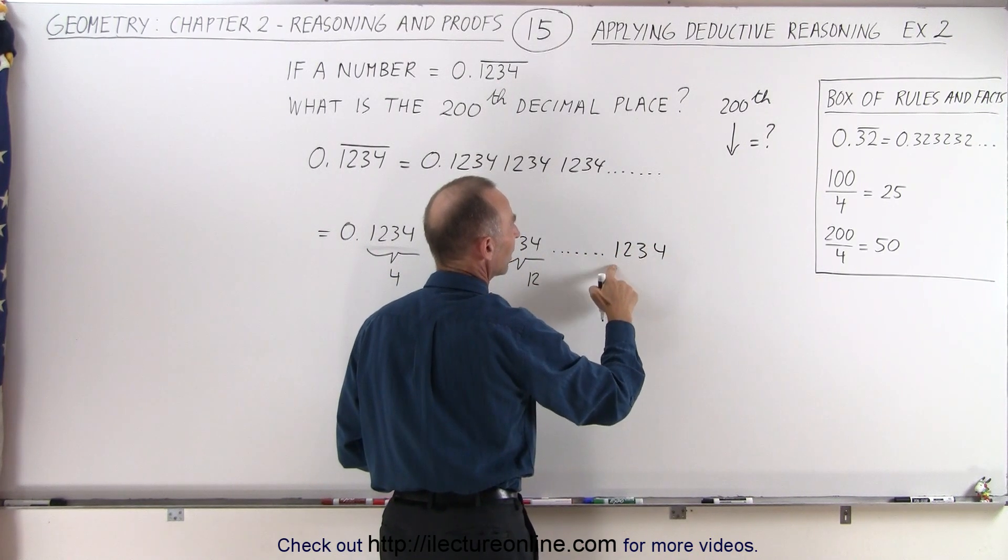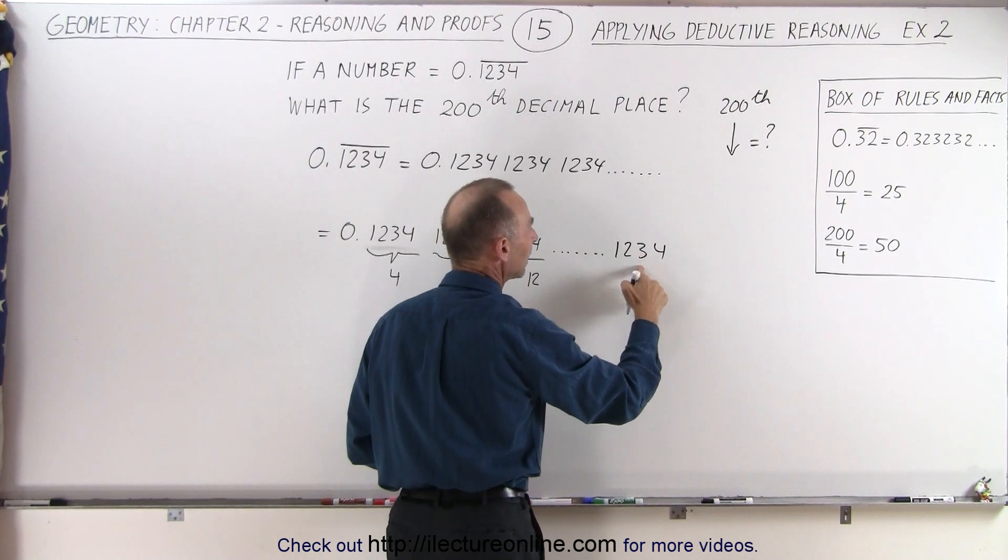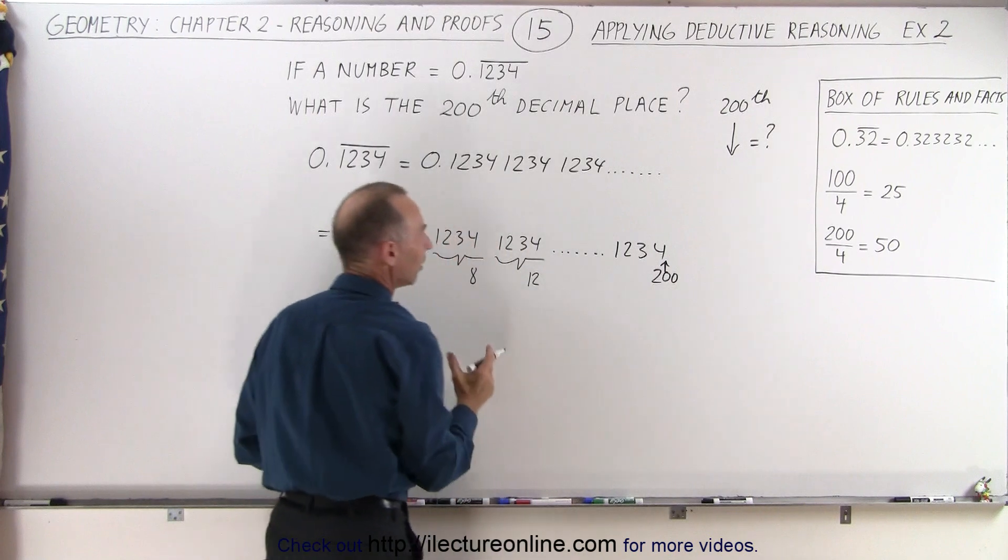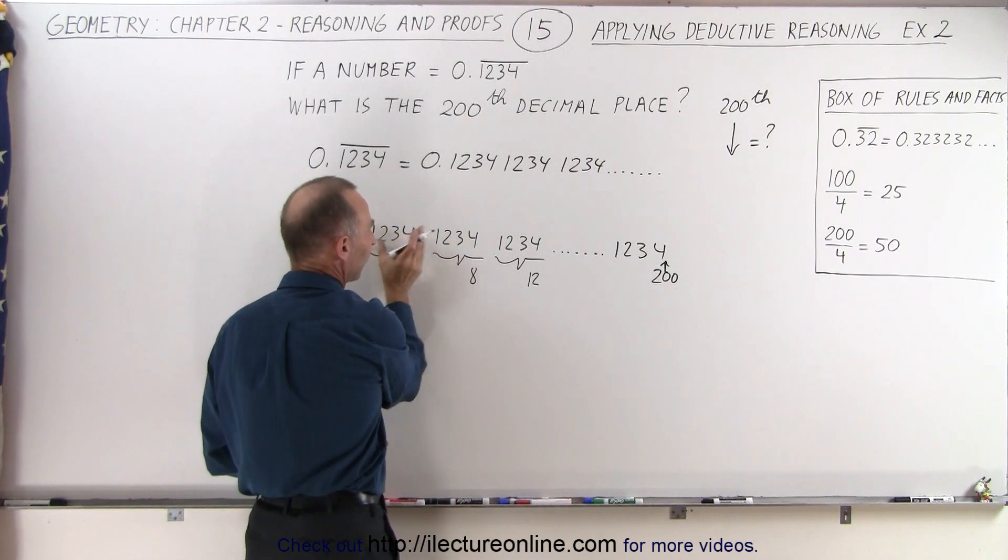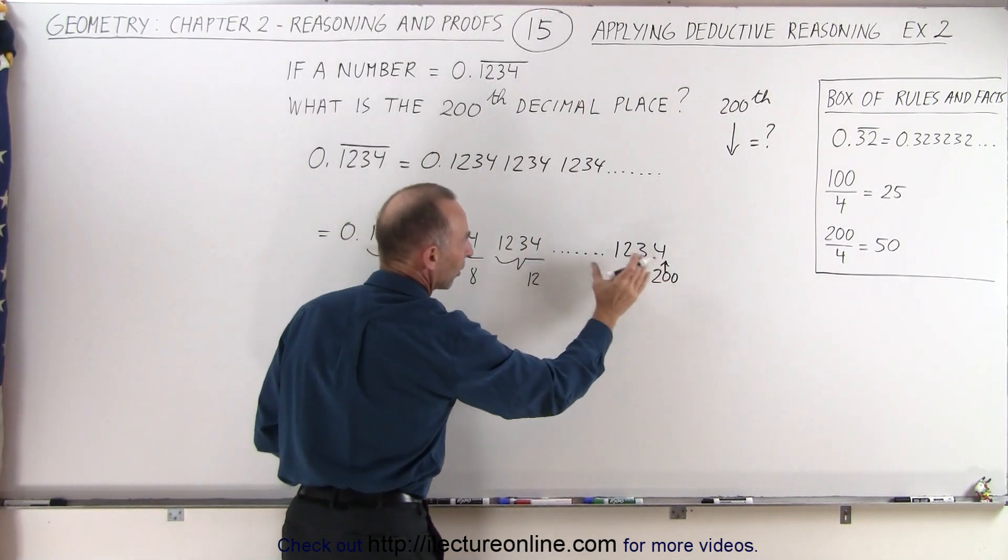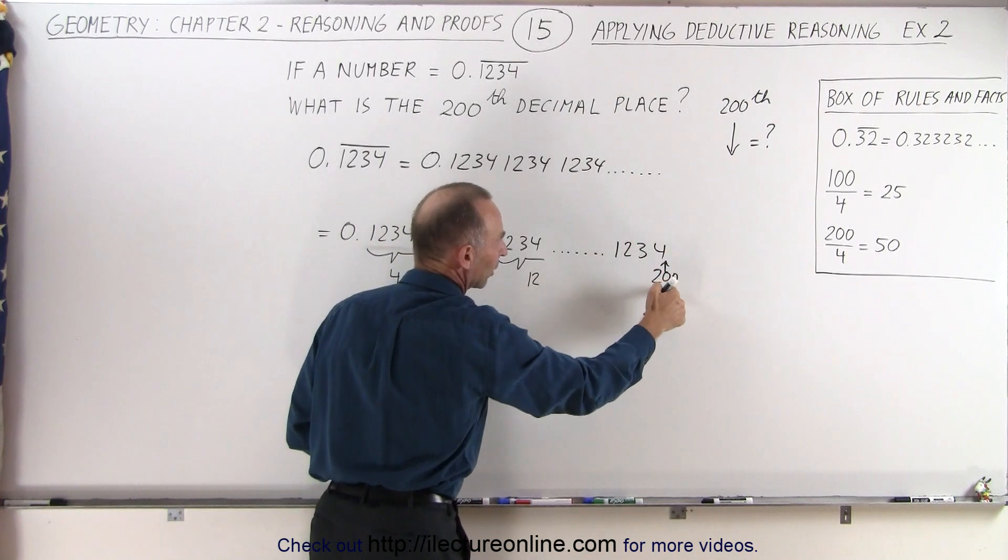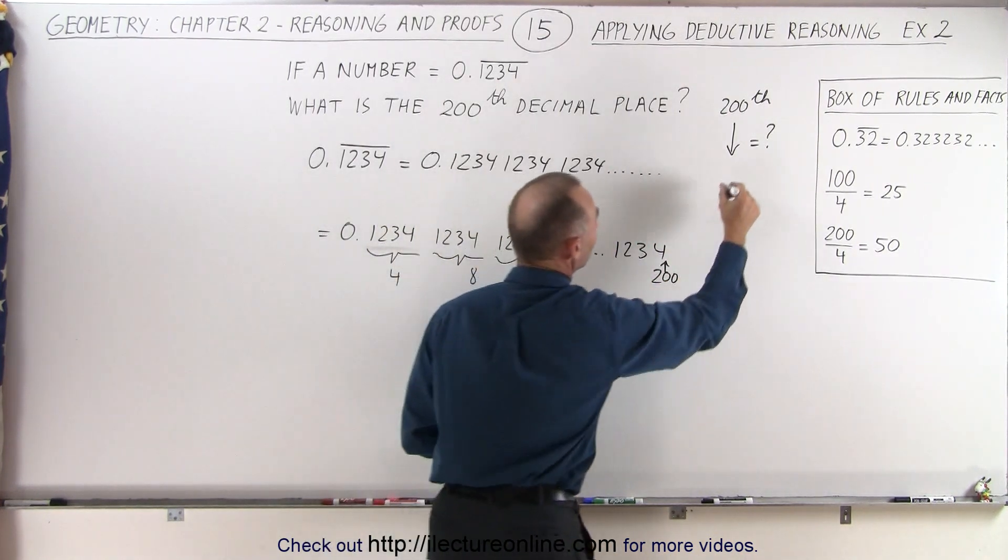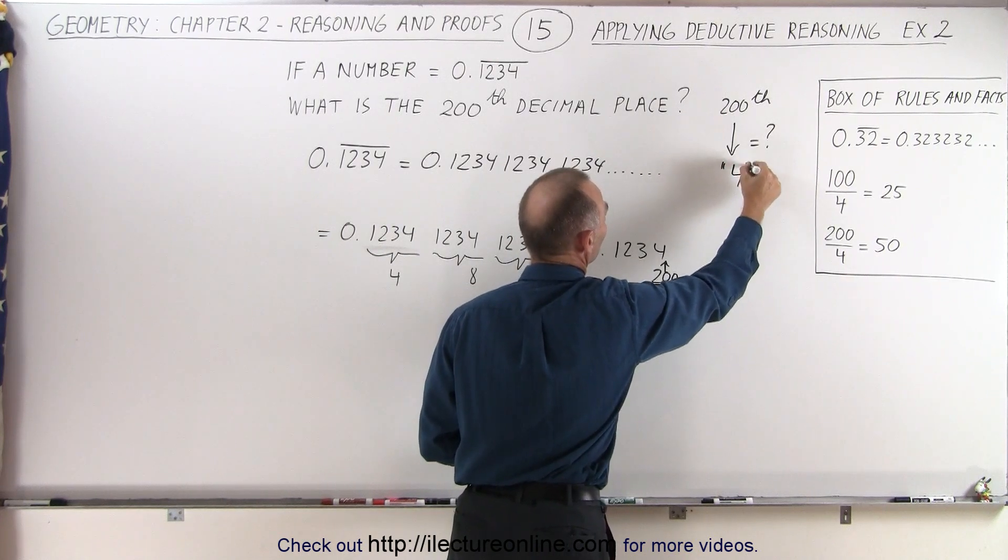That will be 197, 198, 199. And that would be the 200th decimal place. Because we know that we're going to have 50 of these groups of numbers. Until we have 50 of them, the very last one will be the 200th. And therefore, the 200th decimal place is equal to the number 4.